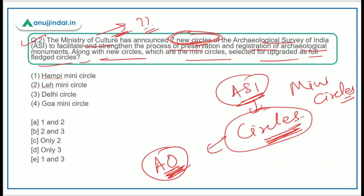The correct answer should be Humpi mini circle and Delhi circle, so option E — statements 1 and 3 — will be the correct answer.